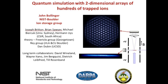I'm going to be talking about work done by two post-docs, Joe Britton and Brian Sawyer, and their work builds on previous work by Michael Biersik and Herman Ace. It's a pleasure to acknowledge lots of good theory support from the Freerichs group at Georgetown, Annemarie Ray's group, Dan Dubin — a plasma physicist at the University of California San Diego — and at NIST we have the great advantage of having lots of good long-term collaborators.